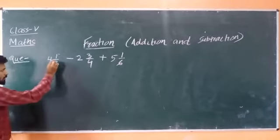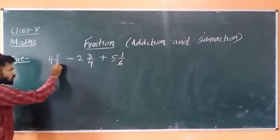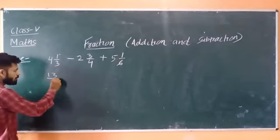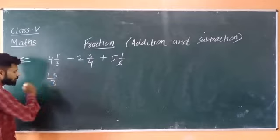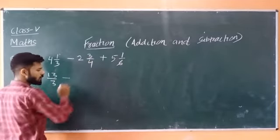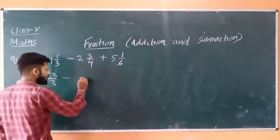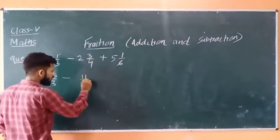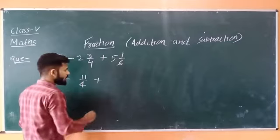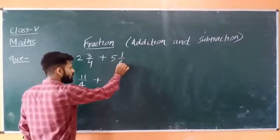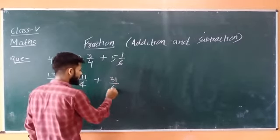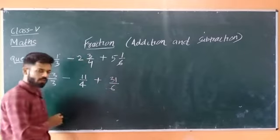So firstly we will convert the first one: 4 threes are 12, plus 1 gives 13, so 13 upon 3. Then we put a minus sign. Next: 4 twos are 8, and 8 plus 3 is 11, so 11 upon 4. Then we put a plus sign. Next: 5 sixes are 30, plus 1 is 31, so 31 upon 6. We have now converted all the mixed fractions into improper fractions.